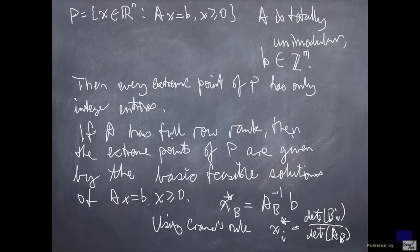Now I know that the determinant of a totally unimodular matrix is going to be 1 or minus 1 in this case, because A sub B is non-singular. And since all the entries in this B_i are integers, we know that the determinant of this is going to be an integer as well. When you have an integer divided by 1 or minus 1, you get an integer. So x_i-star has to be an integer. That basically shows that every basic feasible solution to this system has only integer entries, and so every extreme point of P has only integer entries.